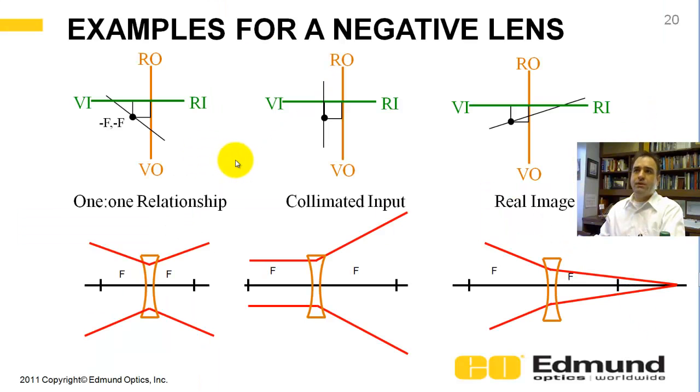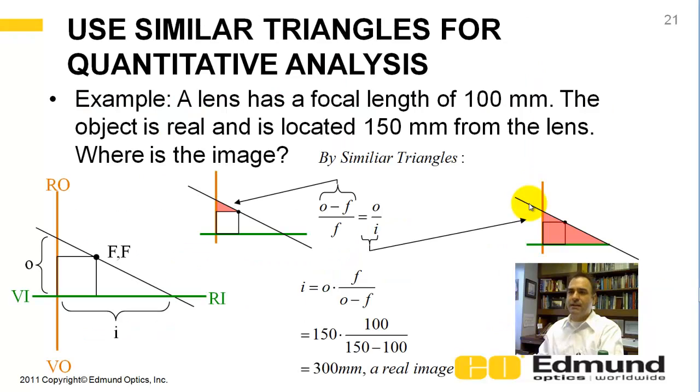This also works for a negative lens. I'm not going to go into detail here. There's sort of a one-to-one imaging relationship, collimated input, and how you get a real image in a negative lens. I'm limited by time. All these animated GIFs will be on my website, OpticsRealm.com. You can download them. You can go and view them. I'll have some there that I just didn't have time to get into this video.